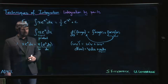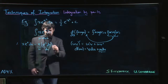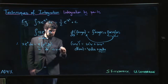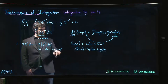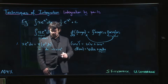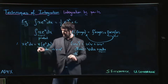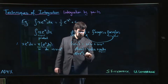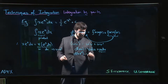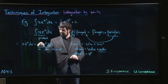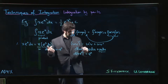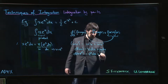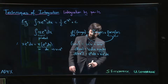If dv = e^x dx, then v = e^x. So we have u = x and v = e^x. Then du = dx. Putting it together: u·dv is x·e^x dx — that's the thing we want to integrate — and v·du is e^x dx.